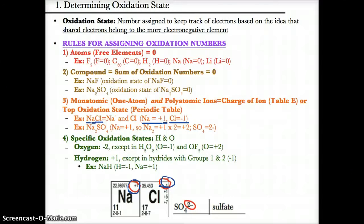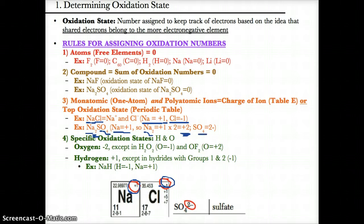In Na2SO4, Na's charge equals the top oxidation state of Na on the periodic table, which is +1. Since the compound is Na2SO4, the total oxidation state of Na2 would be +1 times 2, or +2. The SO4 part has an oxidation state of -2 based on its charge from table E, balancing out the Na2 to give zero overall.